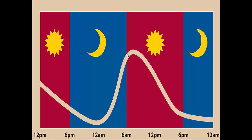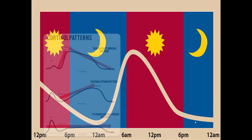Cortisol is highest in the morning and lowest at night. When we look at phase one, phase two, and phase three adrenal fatigue, we're looking at the variations of that rhythm. Stage one: cortisol is high. Stage two: cortisol is somewhere in between or fluctuating back and forth. Stage three: there's typically a flattening of cortisol.